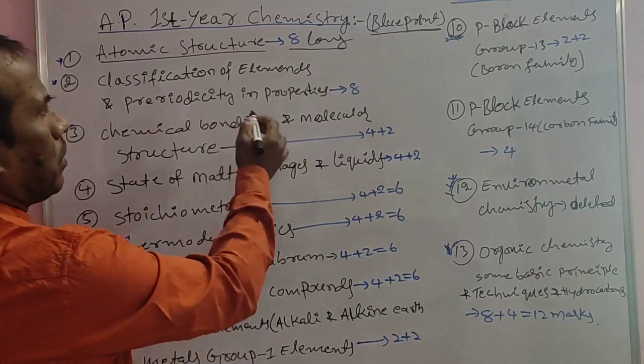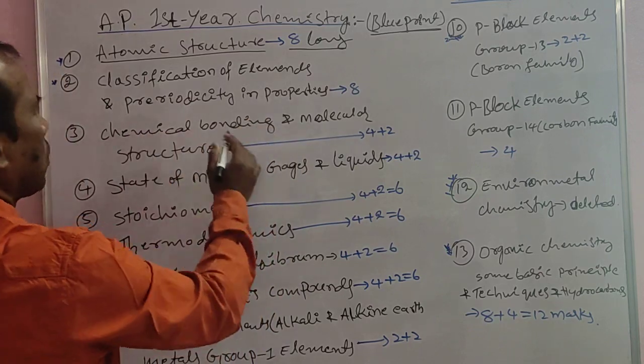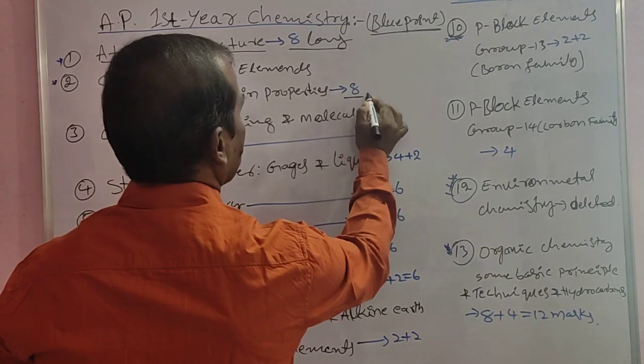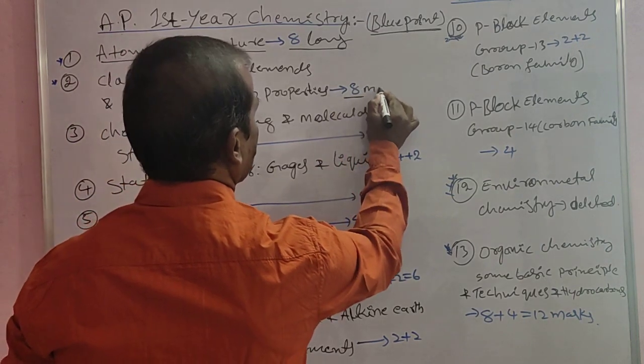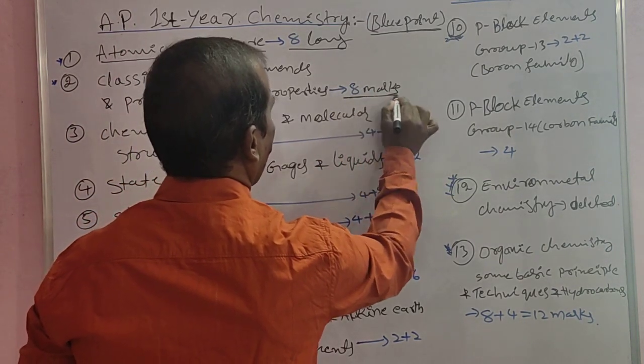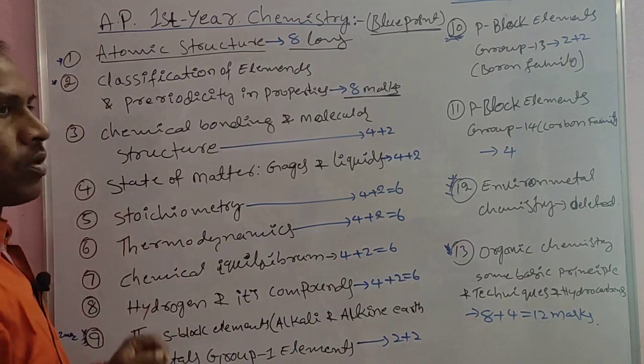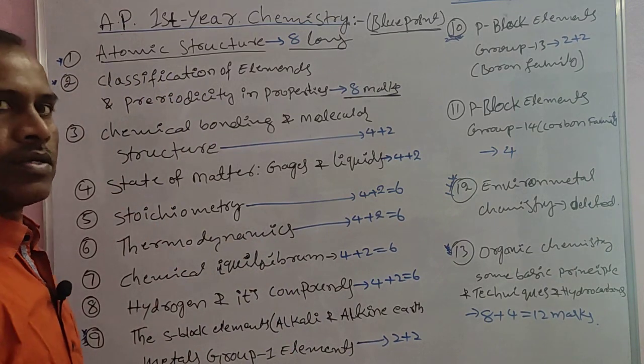The second topic is Classification of Elements and Periodicity in Properties. This topic also carries 8 marks. From this topic, there is one long answer question. So both the first and second topics — Atomic Structure and Classification of Elements — each carry 8 marks with one long answer each.